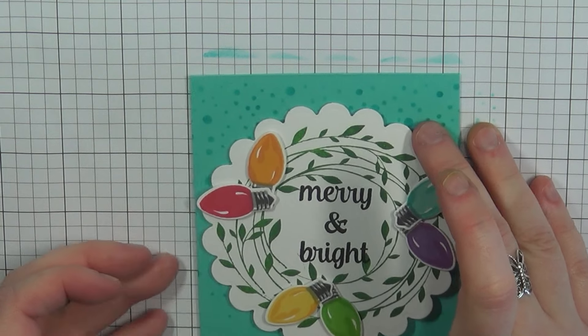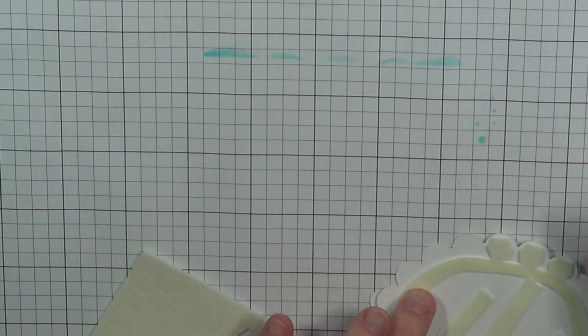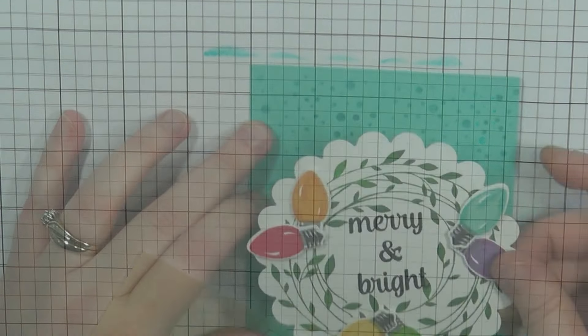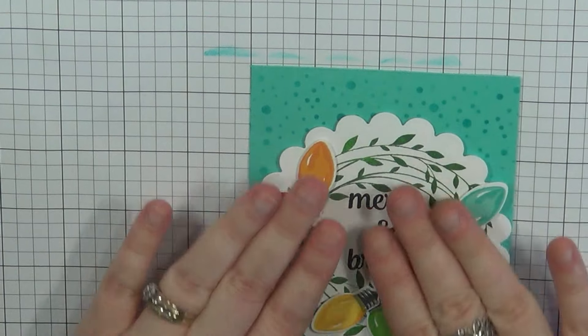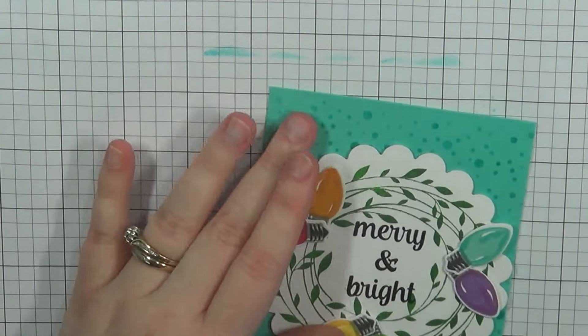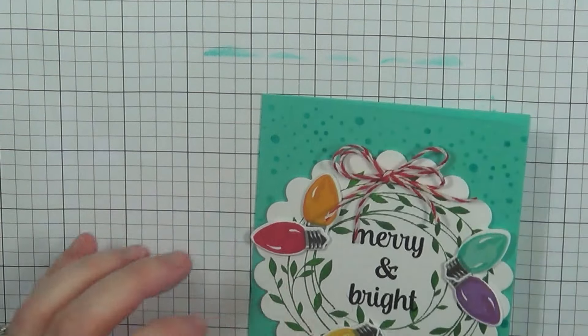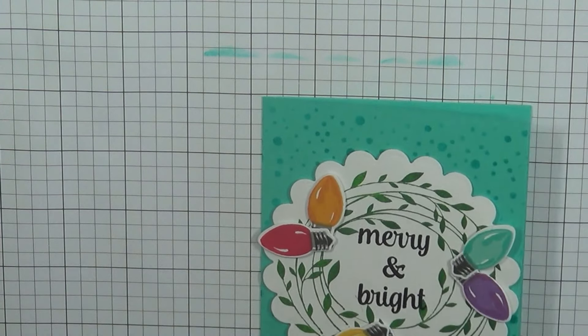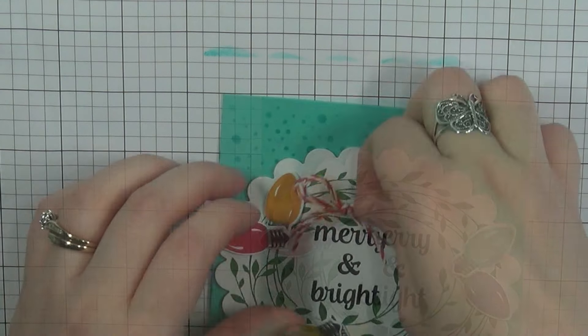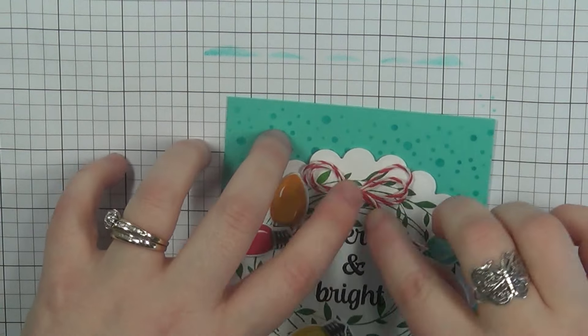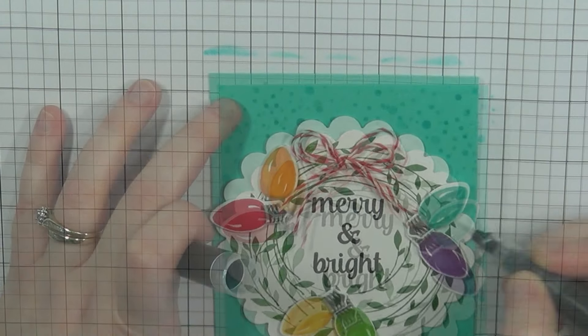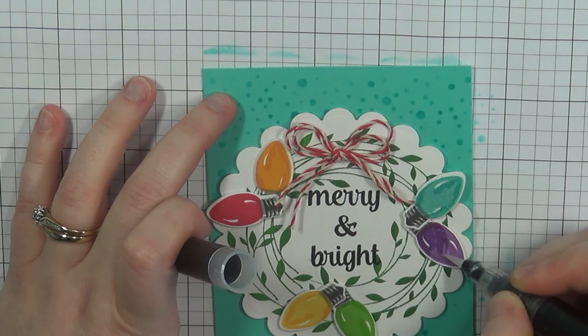So now it's time to go ahead and add some foam adhesive on the back of my wreath. So I went ahead and placed all of my foam adhesive all around the circles as best as I could and then remove all the backings and now I'm going to go ahead and adhere that to my card base. And then what I'm going to do is add the bow here. So I'm going to take a couple more of my small glue dots and add that to the bow and I'm just going to make sure that that's good and adhered and press down on there.